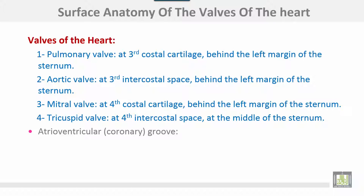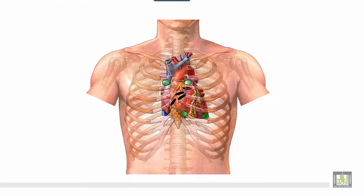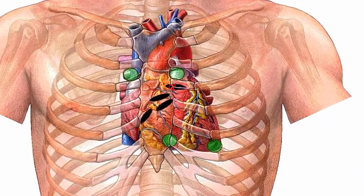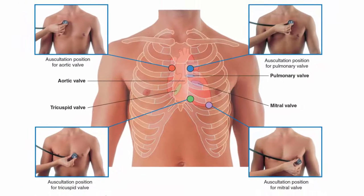The atrioventricular groove, or coronary groove, runs between the third left costal cartilage to the sternum and the sixth right costal cartilage. This is the third intercostal space and the fourth intercostal space. These are the areas of auscultation of the heart on the thoracic wall. The aortic valve is auscultated in the right second intercostal space, and the pulmonary valve in the left second intercostal space.